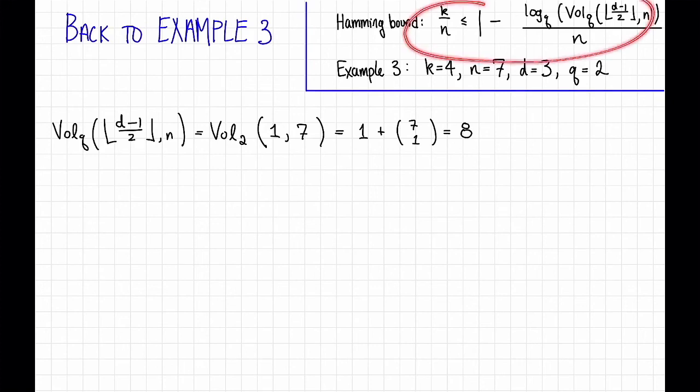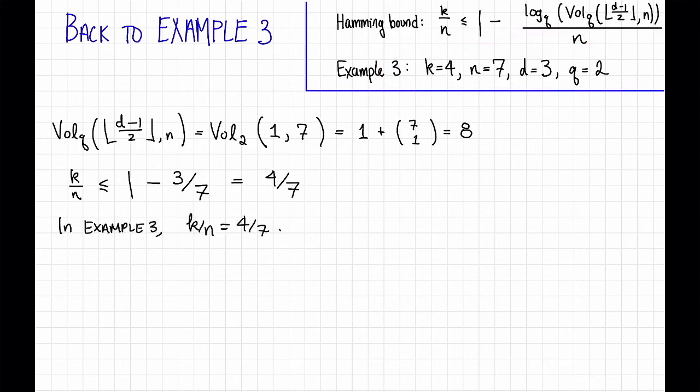Thus we can write down what the Hamming bound says here. It says that k over n for this setting of parameters cannot be any larger than one minus the log base two of eight that's three divided by n that's seven. So this is equal to four sevenths. But notice that for example three actually k over n is equal to four sevenths. So it means that in this case the Hamming bound is tight.